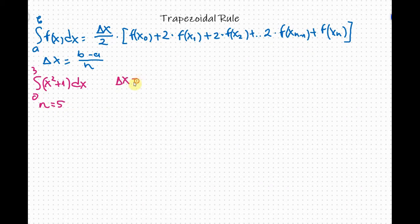Delta x equals b minus a over n. For b we have 3 minus for a we have 0 over 5, or 3 over 5 which equals 0.6.